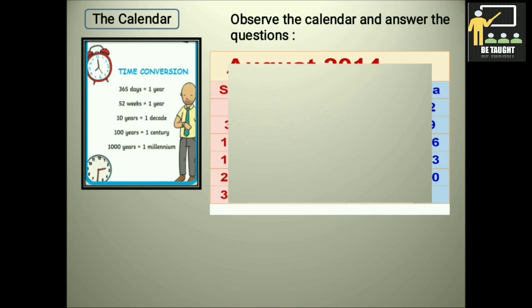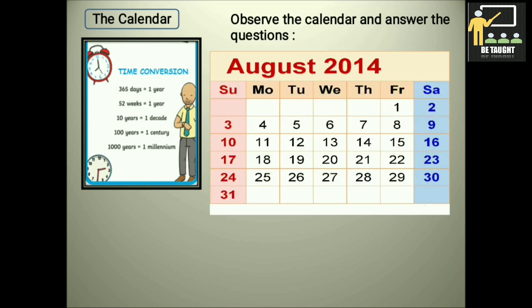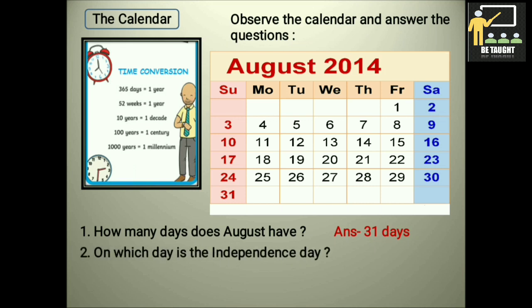Observe the calendar and answer the questions. Now this you have already learned in your previous standards, that how to observe the calendar and answer the questions. Let us see the first question. How many days does August have? So the answer is yes, 31 days. On which day is the Independence Day? So the Independence Day is on 15th of August, and the day which it is, is a Friday. Let us see the next question. How many Mondays does this month have? So we have to count the number of Mondays which are there. So it is, yes, 4.